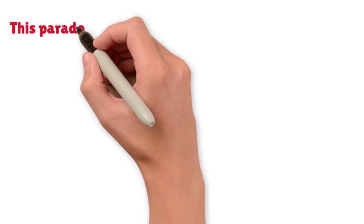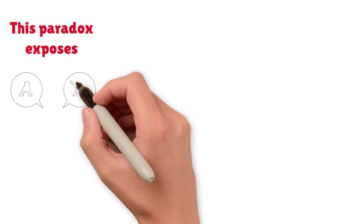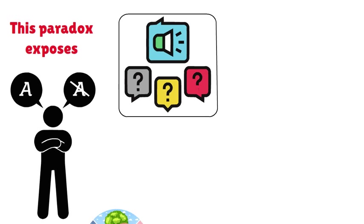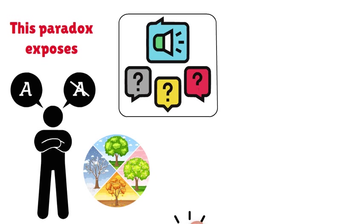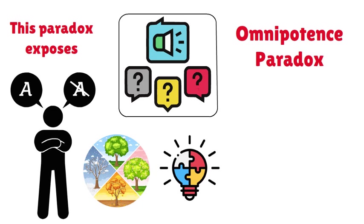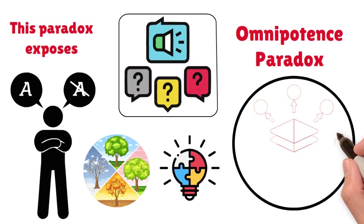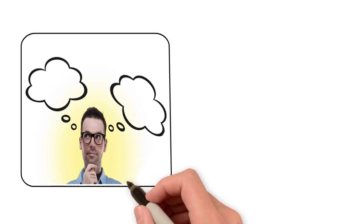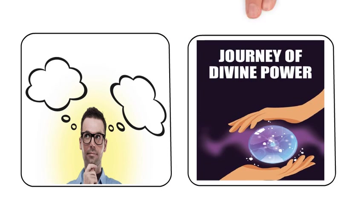This paradox exposes the contradictions within the idea of limitless power. It prompts philosophical inquiries into the nature of omnipotence and the boundaries of logical possibility. The Omnipotence Paradox serves as an illustration of the complexities involved in grappling with abstract concepts, pushing thinkers to re-evaluate fundamental assumptions about the nature of divinity and power.